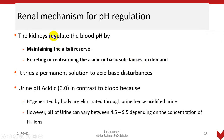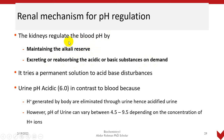As we all know, the kidneys regulate blood pH by maintaining the alkali reserves and excreting or reabsorbing acidic or basic substances on demand. The most important function is maintaining these alkaline reserves because our body produces basic compounds that must be maintained and not excreted under normal situations.